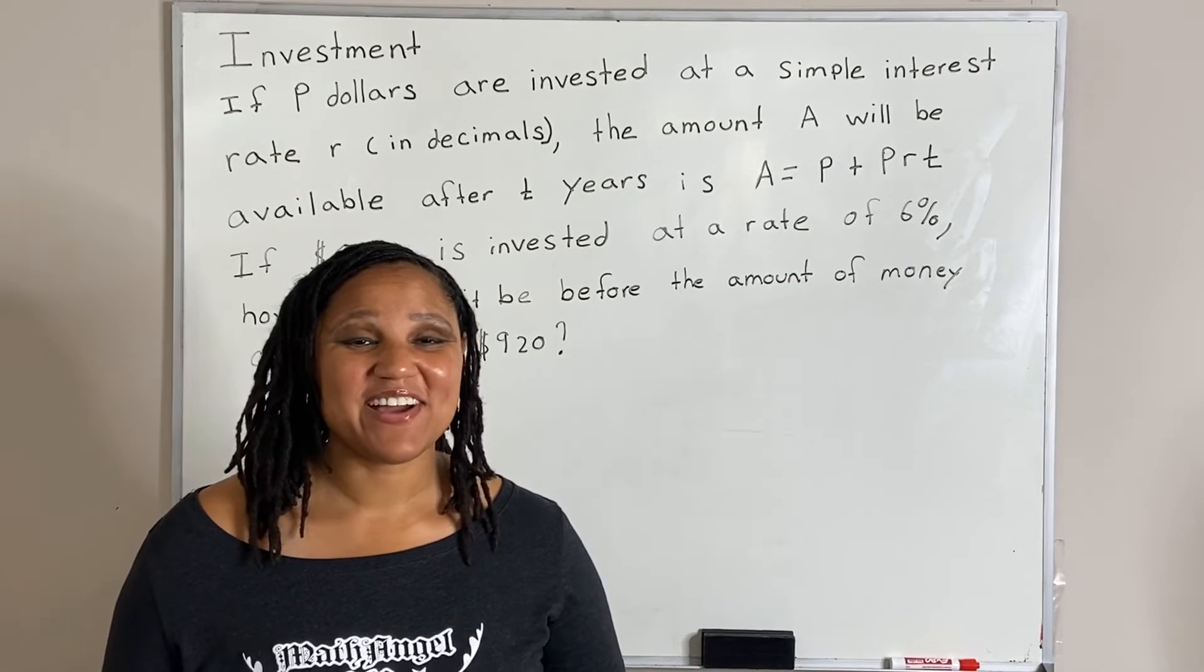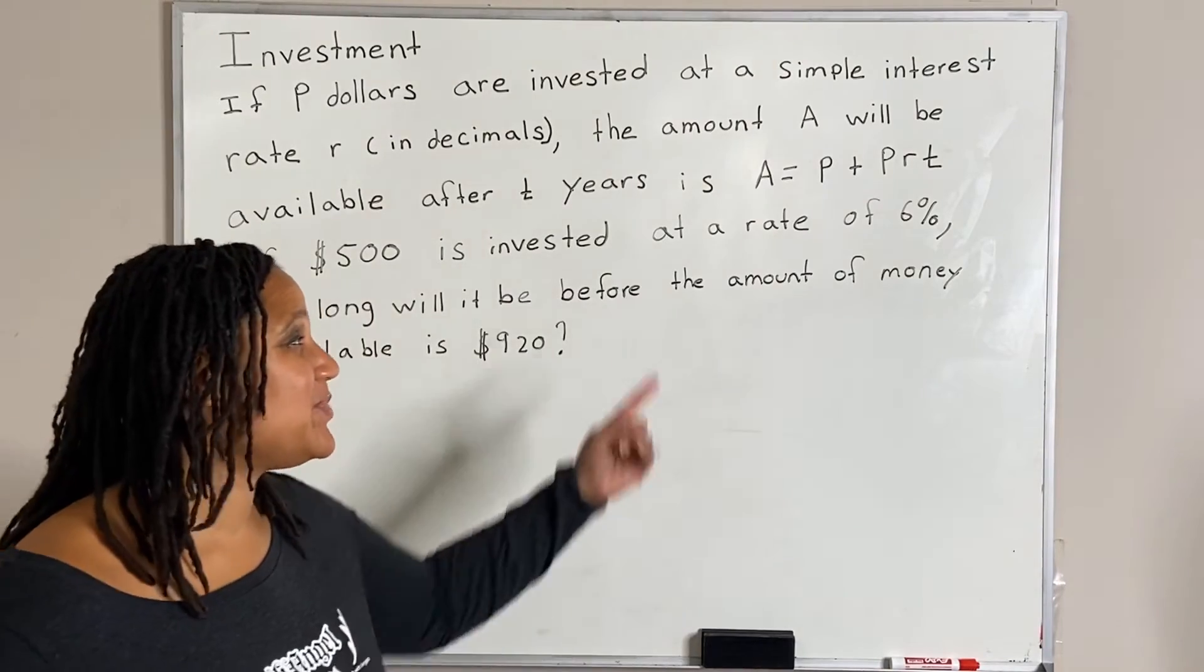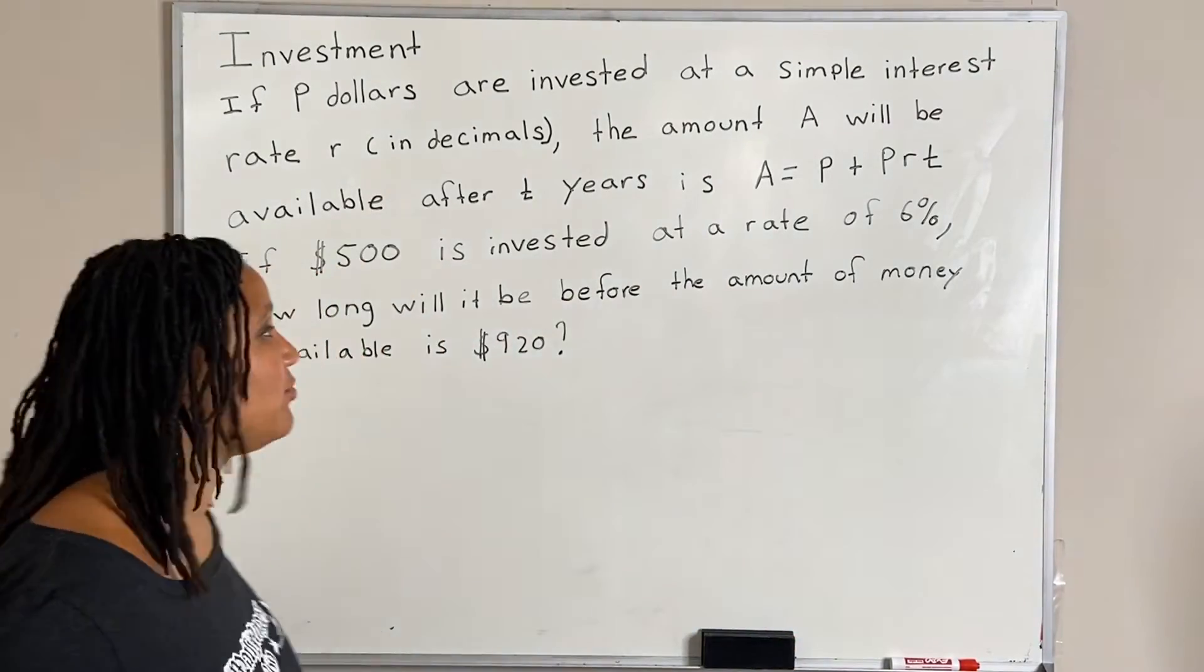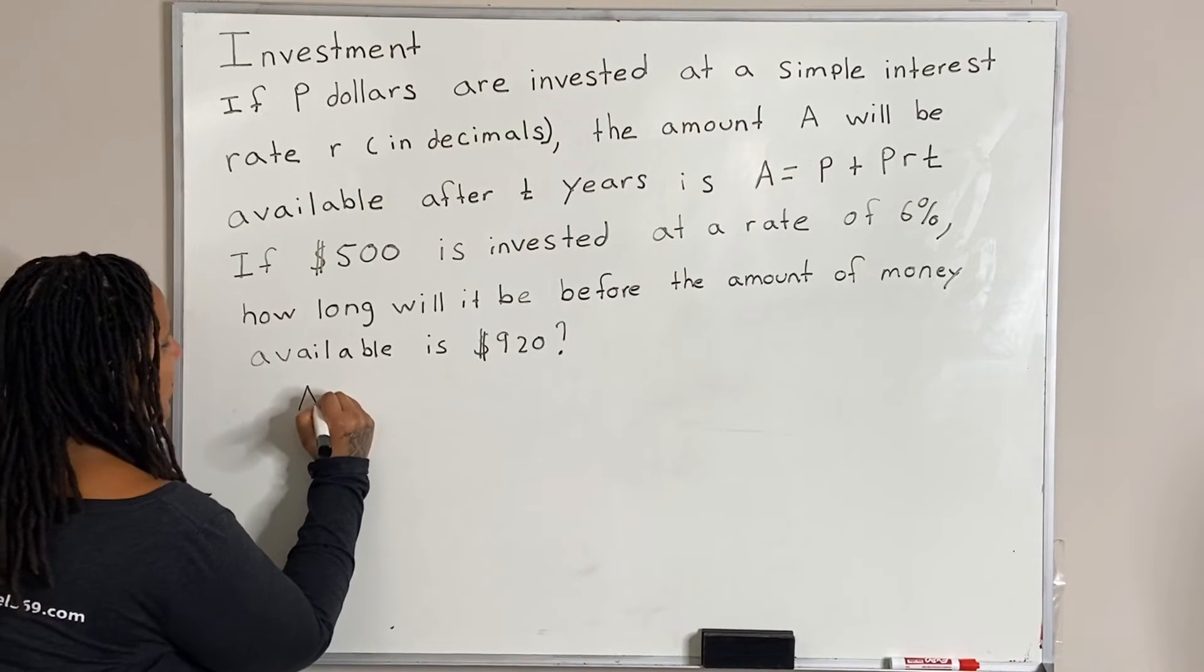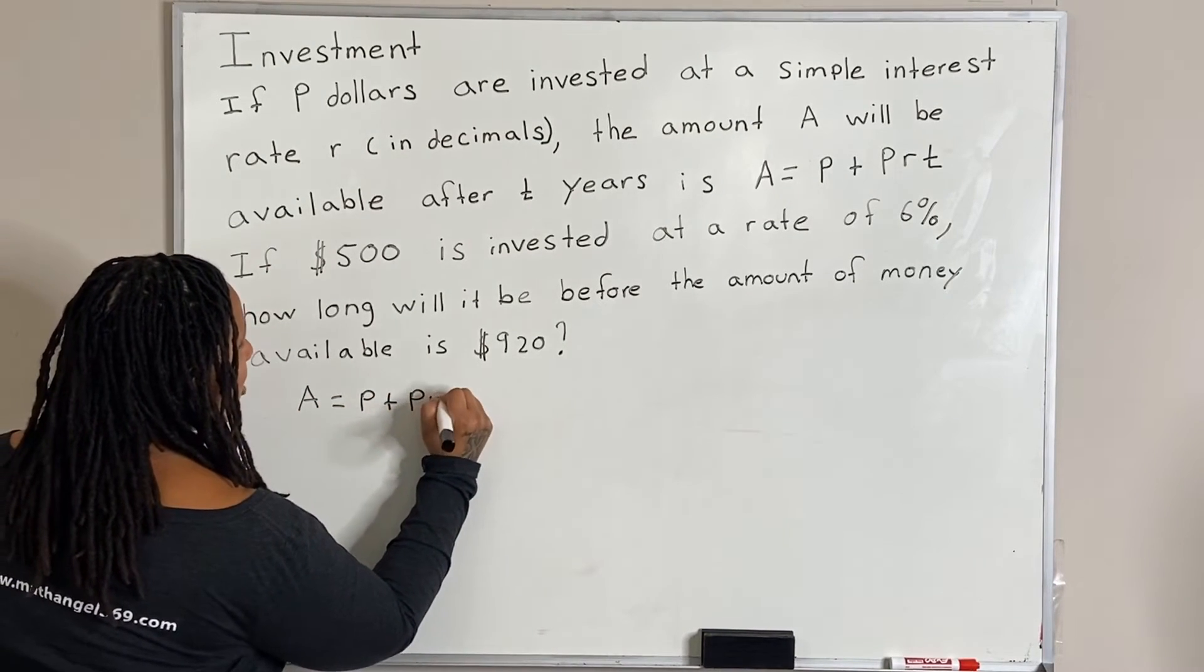Okay, so let's figure out how to tackle this problem. So first thing we want to do is we want to write out the formula. We are already given a formula and the formula is A is equal to P plus PRT.